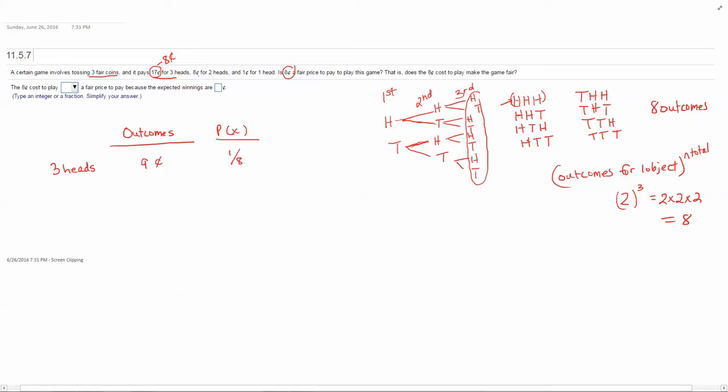The second outcome is 8 cents for two heads. But I need to subtract the cost of play. So 8 minus 8 is actually 0 cents. And the probability of this event, two heads, is all situations where we have exactly two heads. So you wouldn't include the three heads. So I have one, two, three ways to do that. So three out of eight outcomes is two heads.